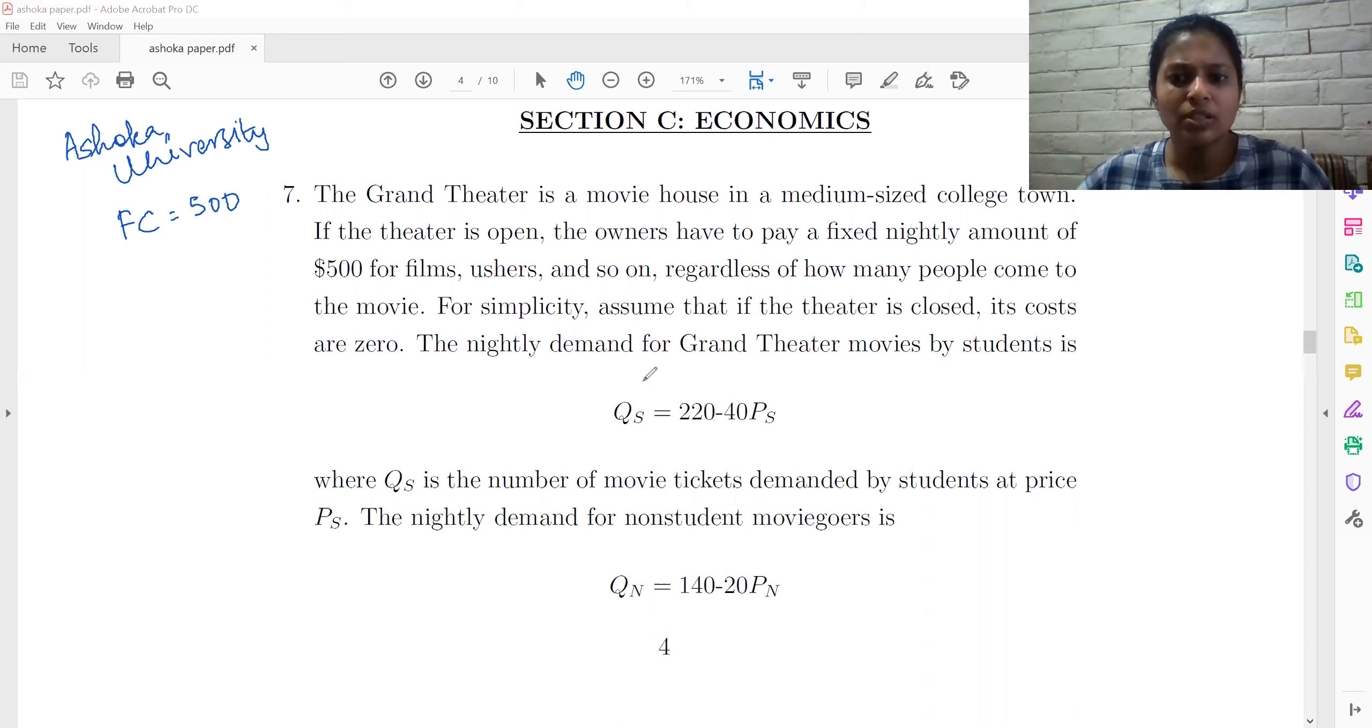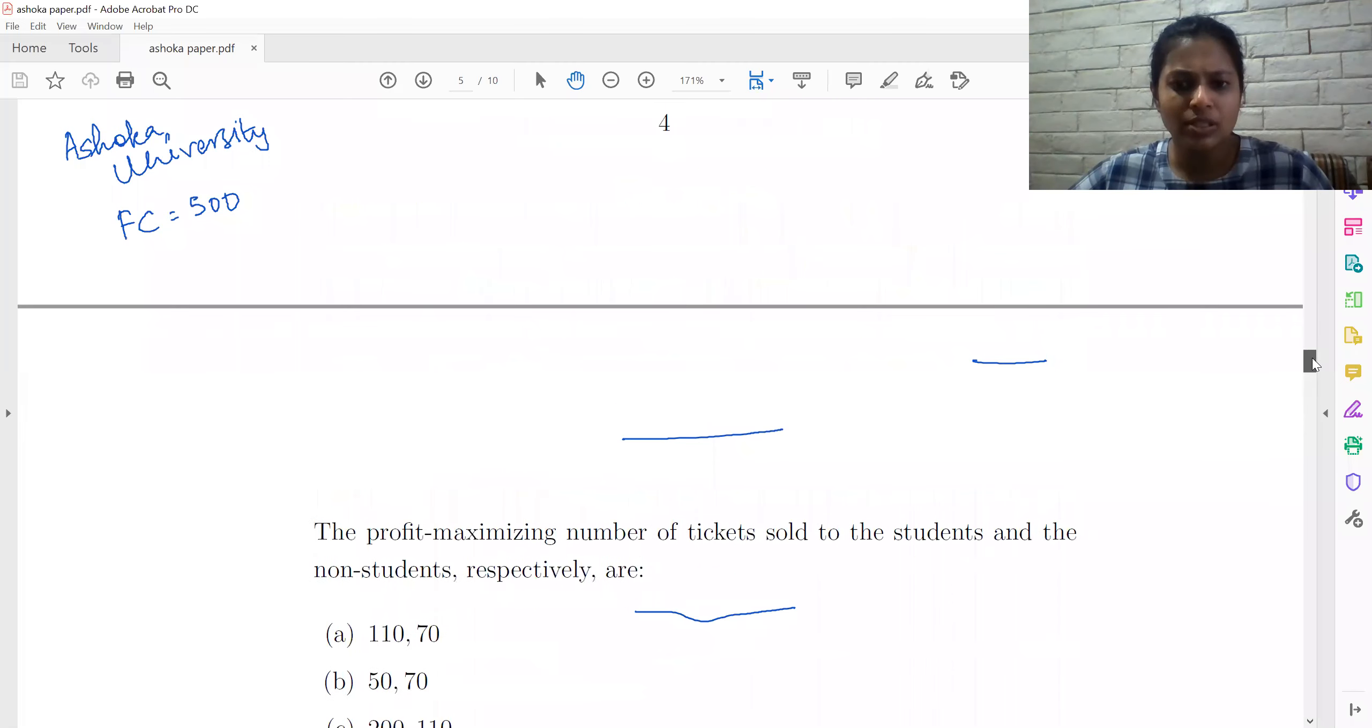Now the demand for theatre is given by this, and this demand is for students, and this is the demand for non-students. Now we have to find what is the optimal quantity of tickets sold to students and non-students respectively.